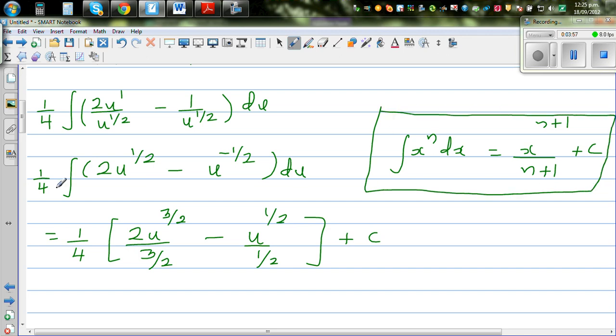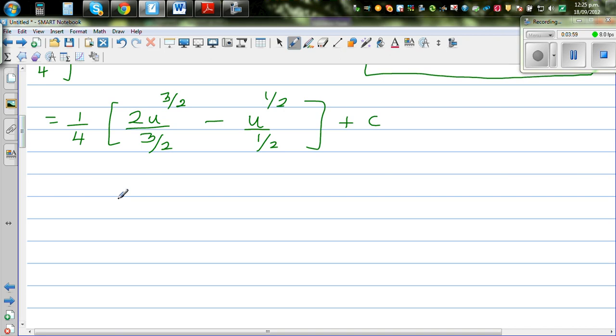So this ultimately becomes, dividing by 3 halves is the same as multiplying by 2 over 3. So this is a quarter. So this is 1 quarter times, this is 4 over 3, u to the power 3 halves.